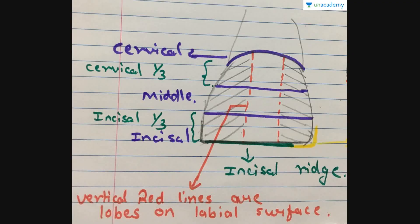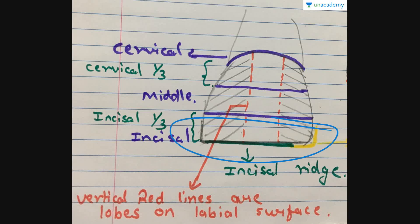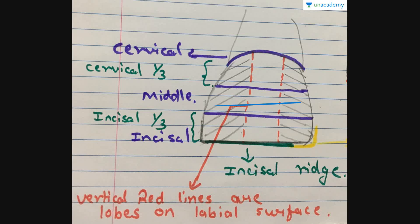The crown and root are divided further for easier understanding. Starting with the crown, it is divided into three parts — shown here for an anterior tooth, specifically a central incisor. The first part is called the incisal portion, the middle is the middle portion, and then comes the cervical portion. The CEJ is the junction of the root and the crown, forming the cervical line. So we have the incisal one-third, the middle one-third, and the cervical one-third.